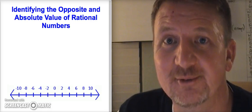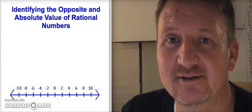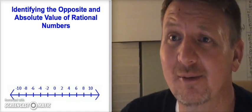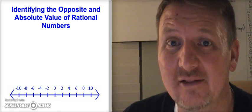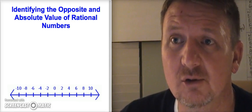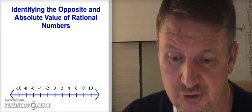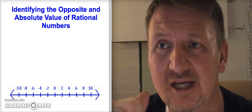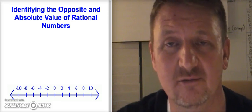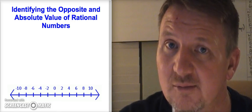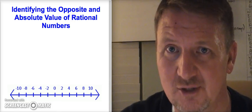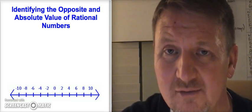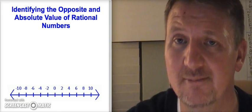Welcome to another edition of Mr. Bell's Math. Today we're going to talk about identifying the opposite and the absolute value of a rational number. By the end of the video, you need to understand how to identify the opposite of a rational number and the absolute value of a rational number. We already know how to do this with integers, so it won't change too much with rational numbers.